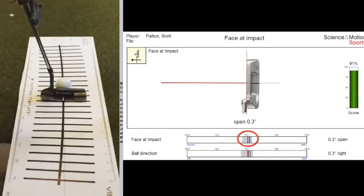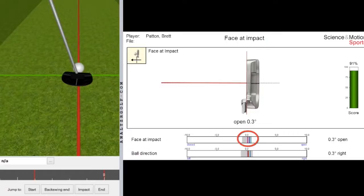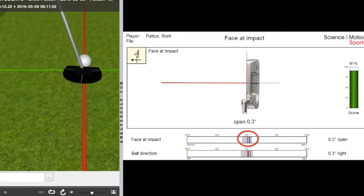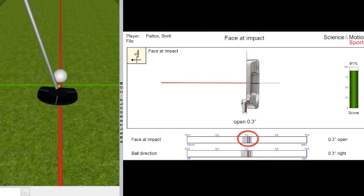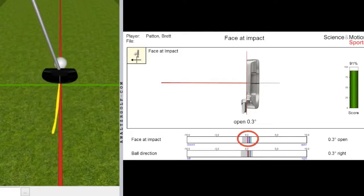We'll also take one last look at the 3D PuttLab software on the left-hand side of your screen here, and take a look as to what that stroke is going to look like using that yellow line to trace the movement path.